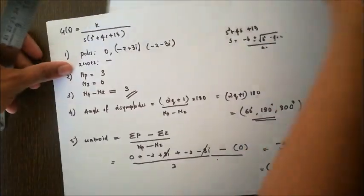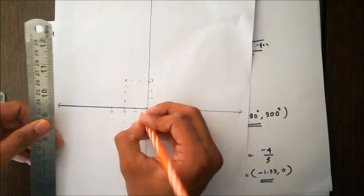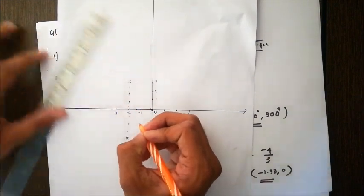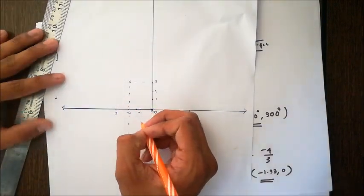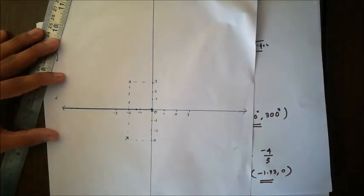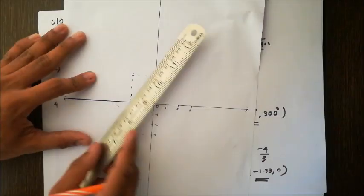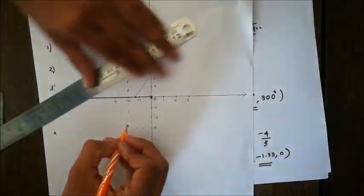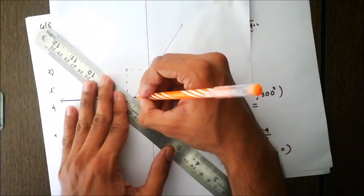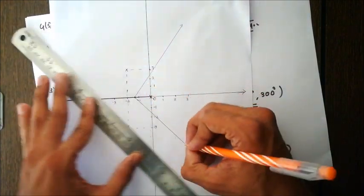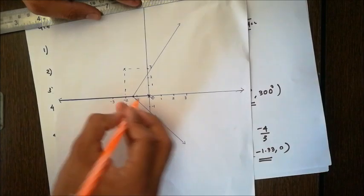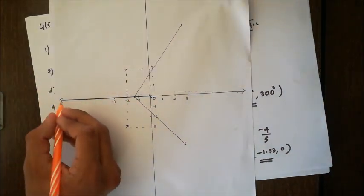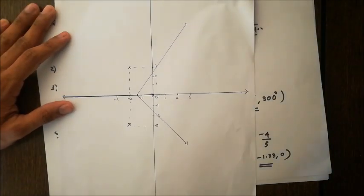I will now draw the asymptotes. From -1.33, we draw asymptotes at 60°, 180°, and 300°. I'll roughly draw 60° here. This is 300°. The angles are 60°, 300°, and 180° which is already our axis line. So these are the 3 asymptotes.